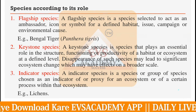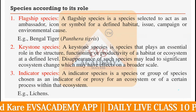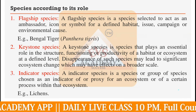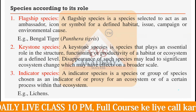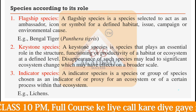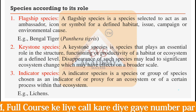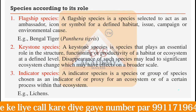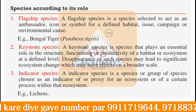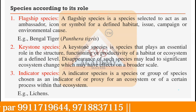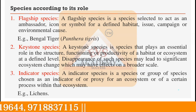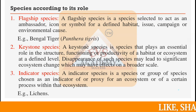These species are divided into multiple different types according to their role. The very first type is the flagship species. For example, if you go to the Bengal forest, the flagship species would be the Bengal tiger.